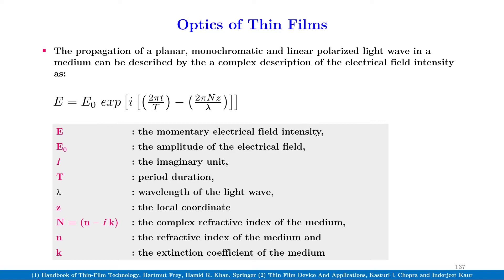The remaining variables are: lambda, the wavelength of the light wave; z, the local coordinate; and N, which is n minus ik, the complex refractive index of the medium, where small n is the refractive index of the medium and k is the extinction coefficient of the medium.